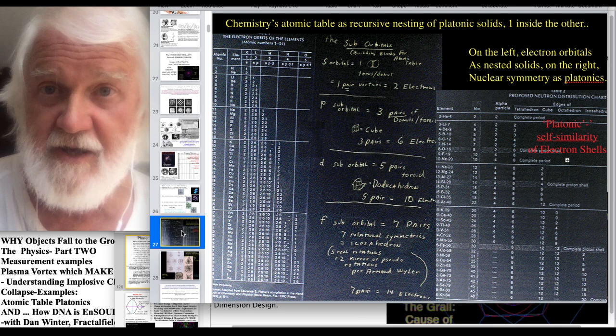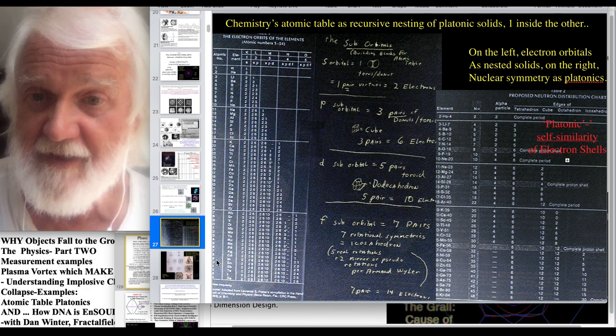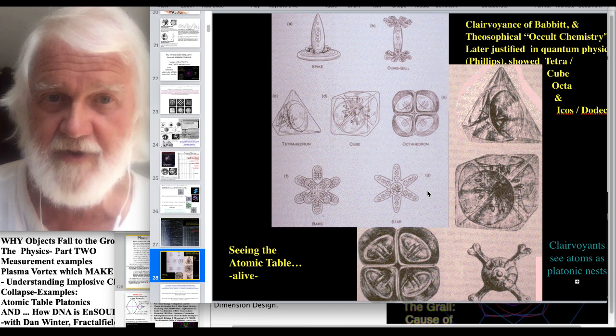So, here's just another picture of the SPDF suborbital is dodecaicosa, and another picture from occult chemistry, seeing a little better the tetracubic, and then the octa, and here is the dodecaicosa. We call it the bars and stars subgroup.